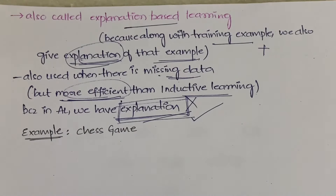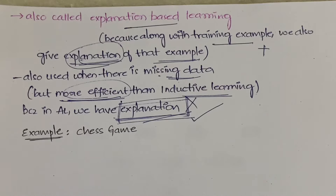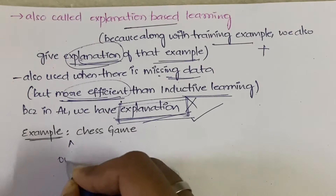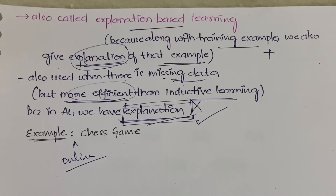The example for analytical learning is a chess game. Suppose you are designing an online chess game. Each piece — like the king — is the training example. Along with that, you must also give the explanation: how many directions the king can move — left, right, up, down, or only certain directions — those are the instructions you provide.